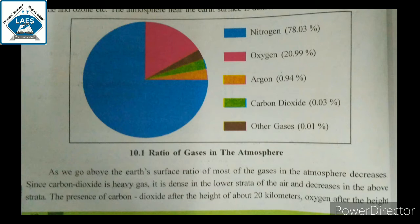As we go above the Earth's surface, the ratio of most gases in the atmosphere decreases. Since carbon dioxide is a heavy gas, it is dense in the lower strata of air and decreases in the above strata.